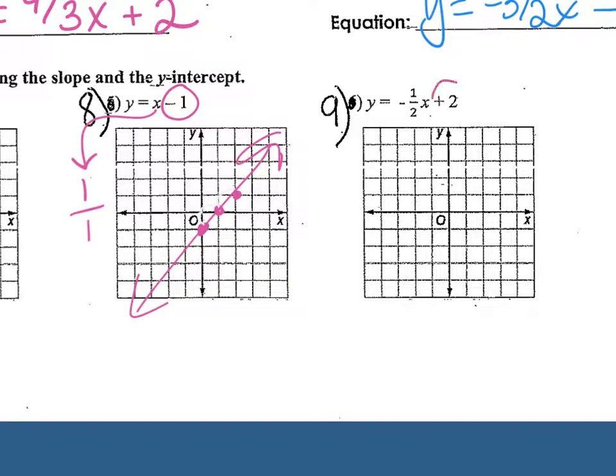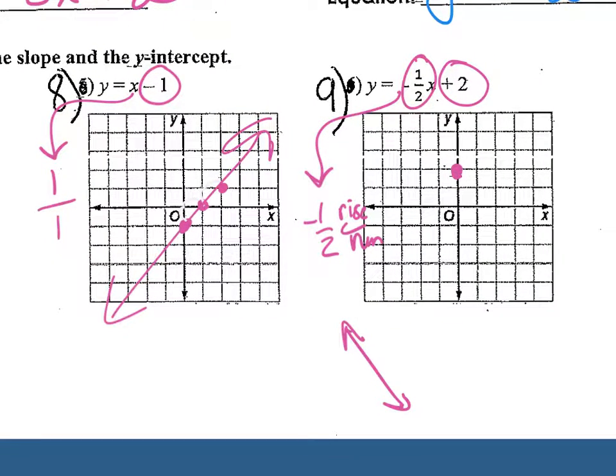Same thing, where do I want to start? Where do I want my first point to be? Positive 2 on the y-axis. And the slope that they gave me, it's a negative, first of all. So I know my line needs to look like that eventually. And it's already in fraction form. So I'm going to use it just like they gave it to me. So from that point, I can go down 1 since it's negative and horizontal 2. So down 1, over 2.